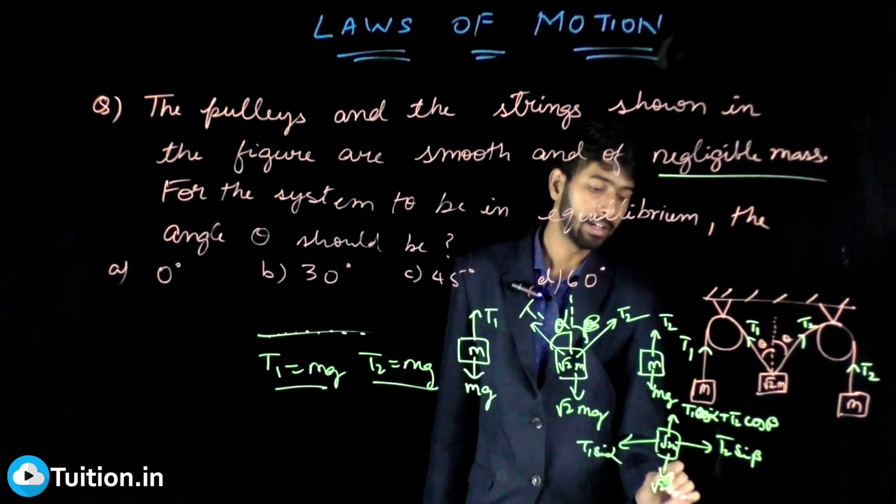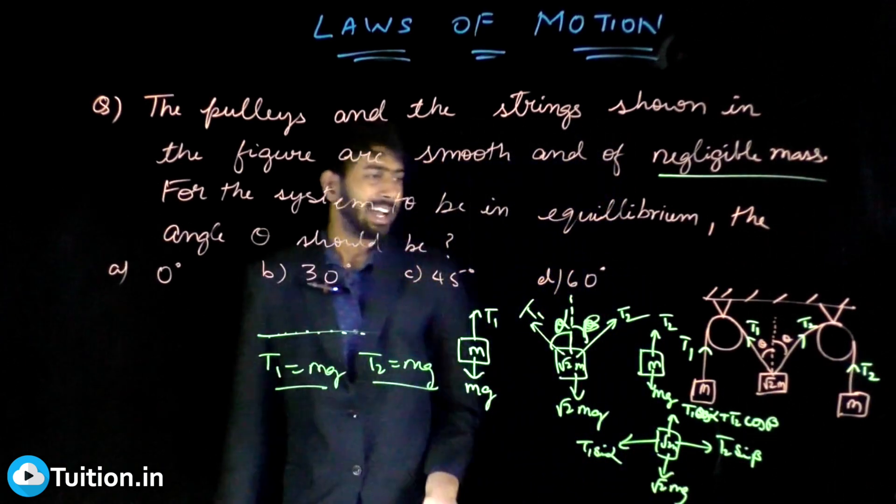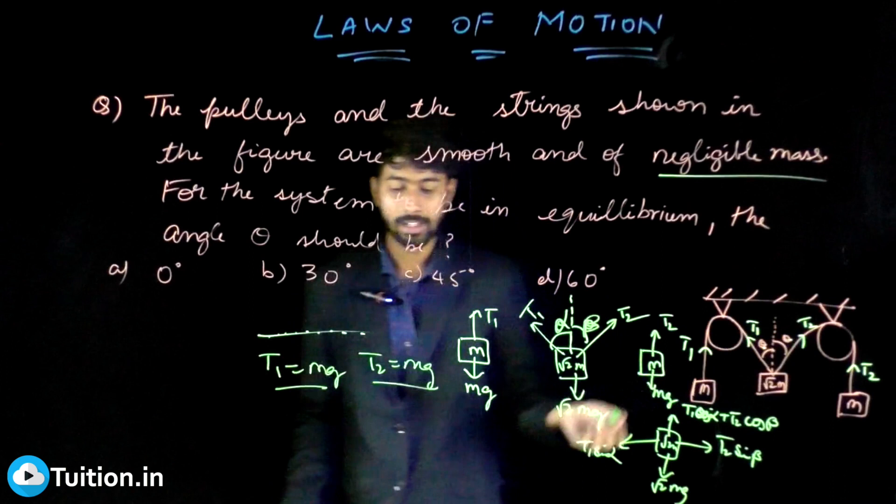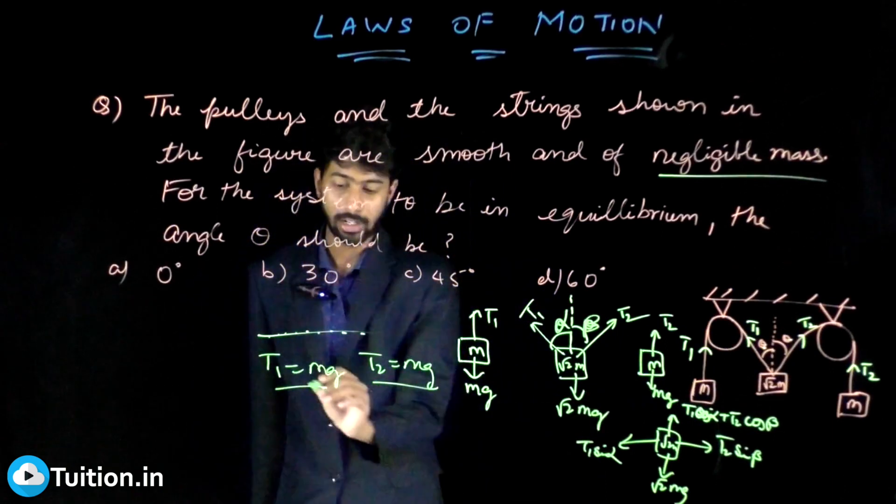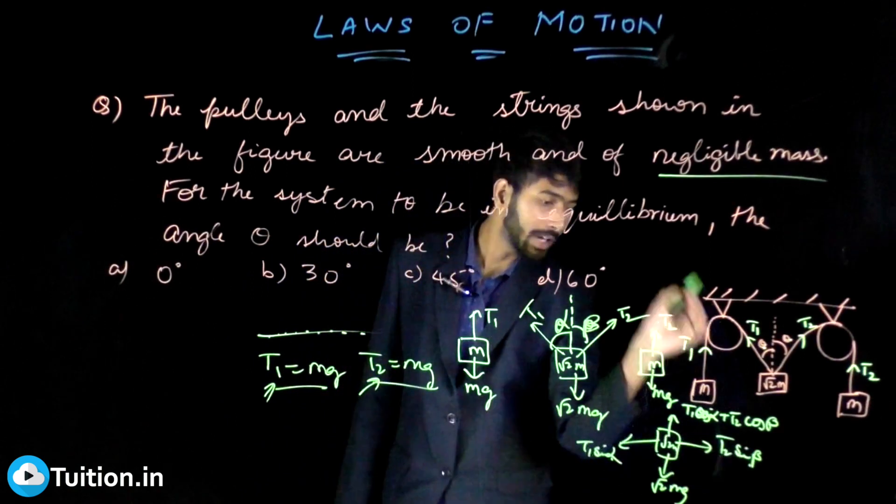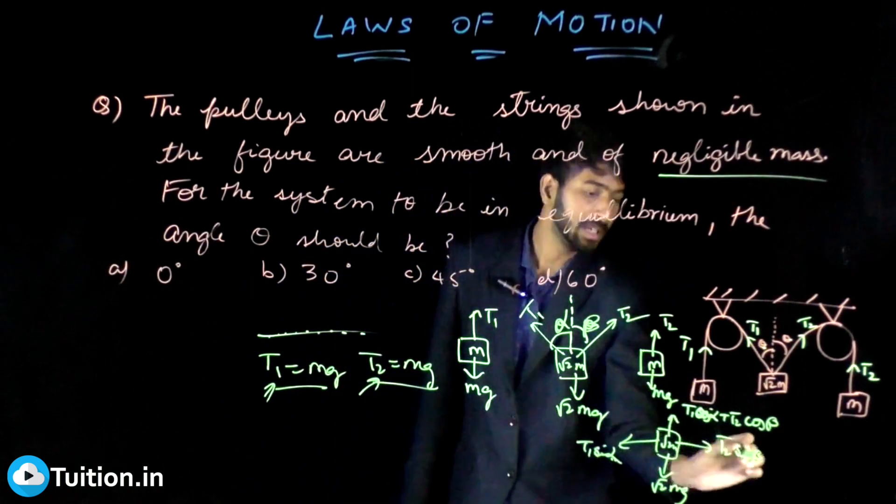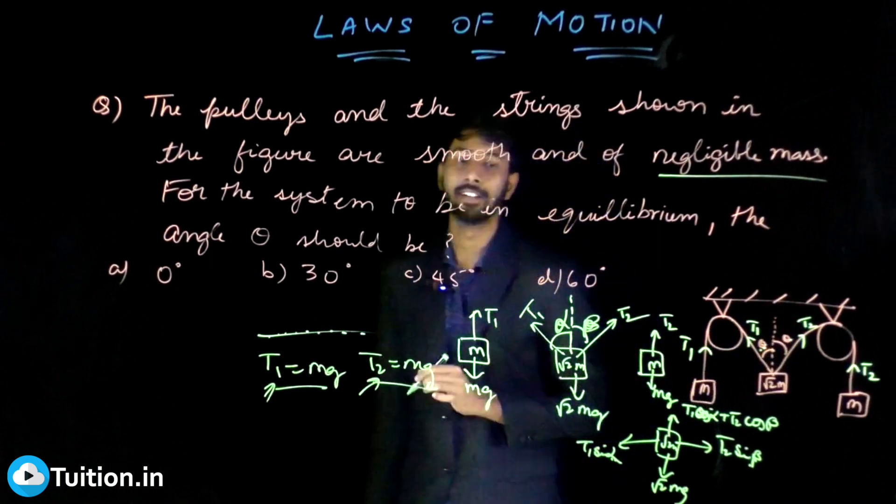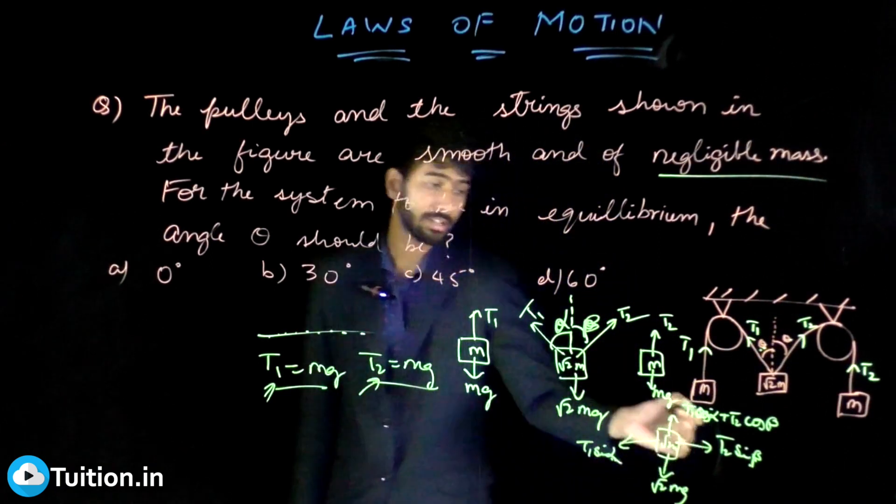Now because I have assumed that these thetas are equal—in fact given in the question also—even if it was not, then you would say T1 equals T2. So T1 equals T2, so sin alpha also has to be sin beta, so alpha has to be equal to beta and both of them have to be some theta.